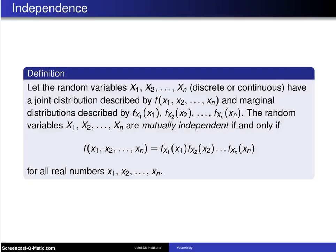The notion of independence also generalizes to multivariate distributions, and here is the definition. Let the random variables x1, x2, up to xn, and these can be either discrete or continuous,